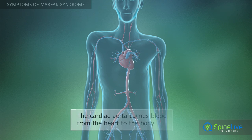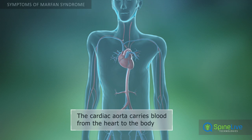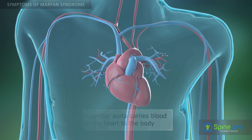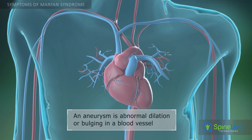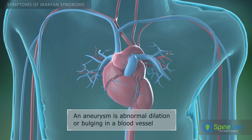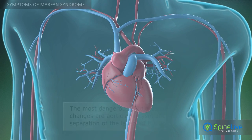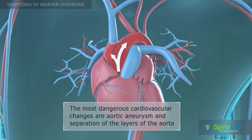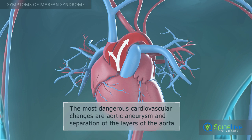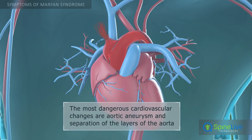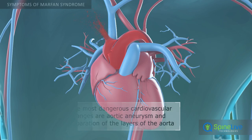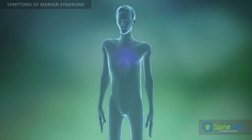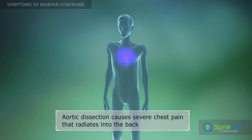The aorta is the primary and largest of all blood vessels; it carries blood from the heart to the body. An aortic aneurysm is the dilation or bulging of a portion of this vessel. Dilation and separation of the layers of the aorta are the most dangerous symptoms of Marfan syndrome, and may lead to aortic dissection or an aortic tear, massive internal bleeding, and sudden death.